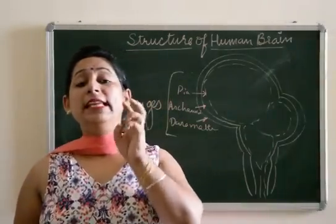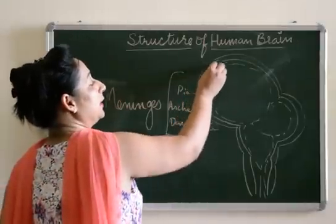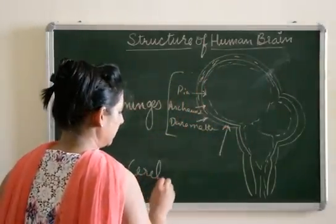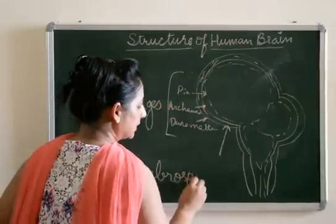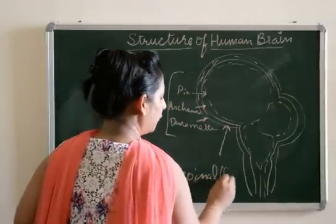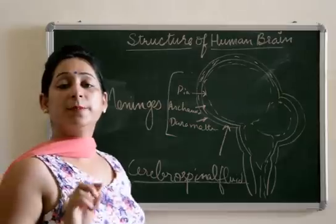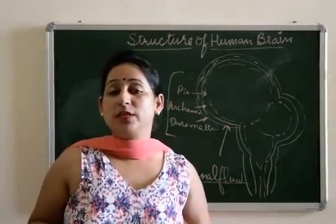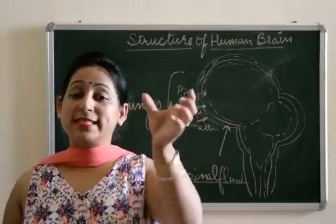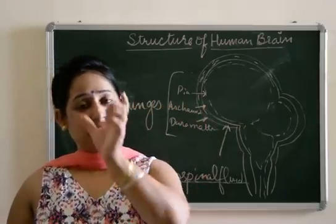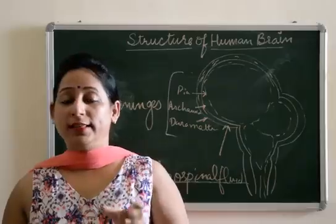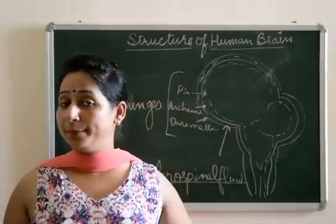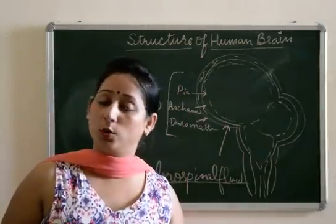Now, between all three meninges, there is a fluid present known as cerebrospinal fluid. The word 'cerebro' came from cerebrum, which is a part of the brain, and 'spinal' comes from the spinal cord. That is, the cerebrospinal fluid is also present between the layers of the spinal cord.